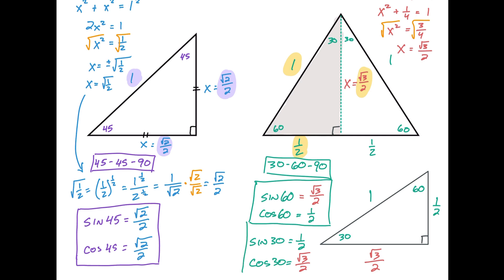So here now we have two more trig ratios. We actually have three sets of trig ratios that we're going to use when we get to the unit circle. These values are going to appear over and over again. If you're ever looking at the unit circle, this is where these values come from. If you're wondering where √2/2 came from, you can come back to this video and quickly see where all of these values are coming from.